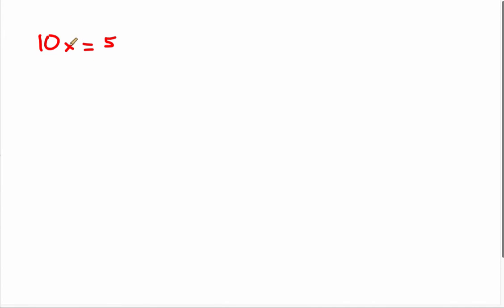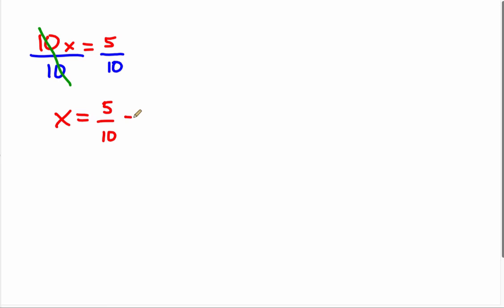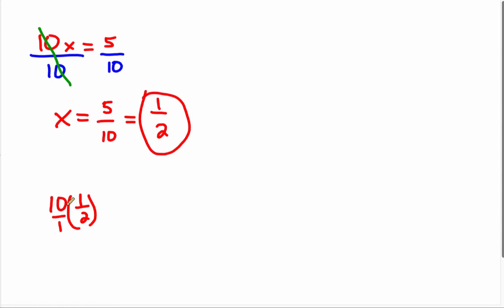Here we have x being multiplied by ten. We can use the division property of equality and divide both sides by ten. The tens cancel out, leaving us with x on the left. In this case, we don't end up with a whole number because five is not divisible by ten. But we can take this fraction, five tenths, and reduce it to one over two. So x equals one half. We can check that: ten times one half, or half of ten, equals five. So one half is the correct answer.